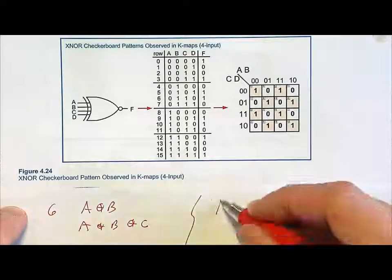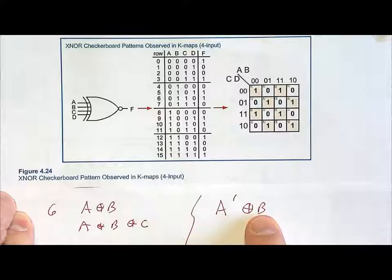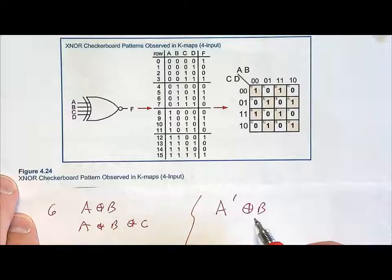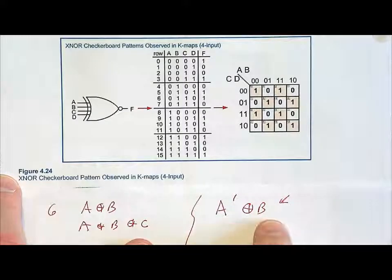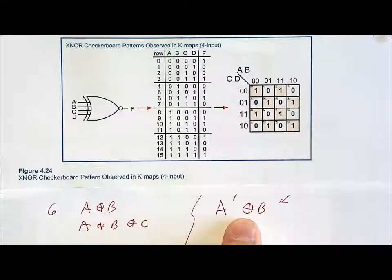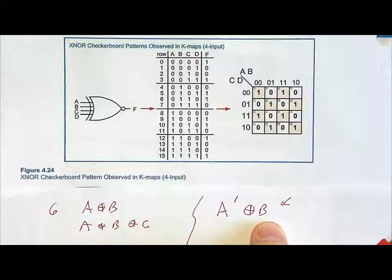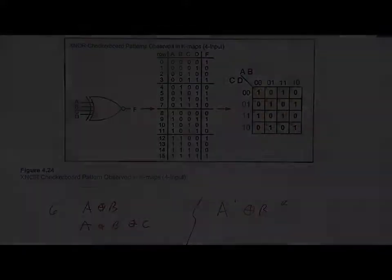What we didn't cover is patterns like A-not exclusive OR with B, which produces yet another checkerboard pattern. We're not going to go into all of them, but you can see that these checkerboard patterns might be easily implemented using exclusive OR gates rather than circling ones and creating a minimized sum of products or product of sums expression. The whole point is: whenever you see a checkerboard pattern, think about exclusive OR and exclusive NOR gates as a way to minimize logic.